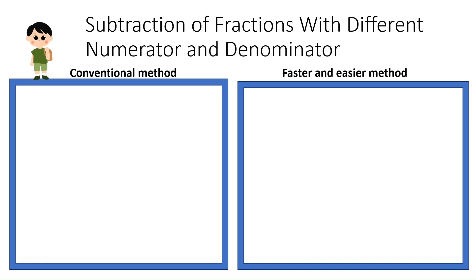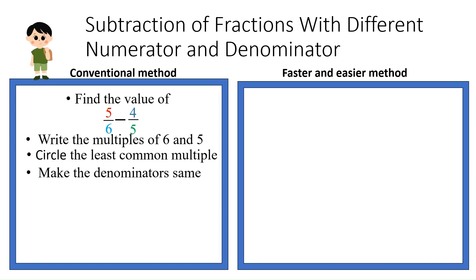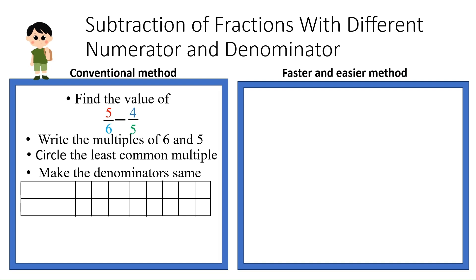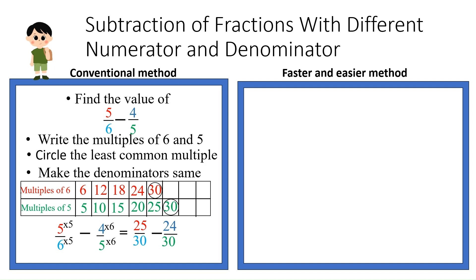Subtraction of fractions with different numerator and denominator. The method is exactly similar to what we have done before. Find the multiples of 6 and 5, circle the least common multiple, and make the denominator the same. List multiples of 6 and multiples of 5, and circle the least common multiple — 30 is the LCM. So 5/6 minus 4/5: make the denominators the same, and you get 25/30 minus 24/30, which is 1/30.